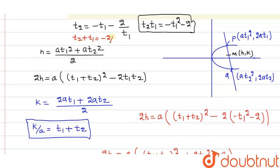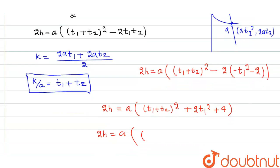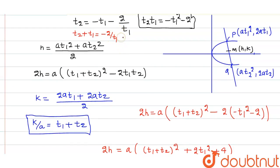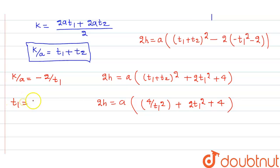Substituting t₁ + t₂ = -2/t₁ into the expression: 2h = a[4/t₁² + 2t₁² + 4]. From k/a = t₁ + t₂ = -2/t₁, we get t₁ = -2a/k.